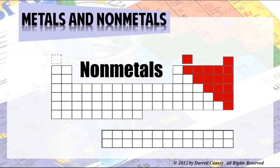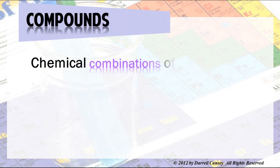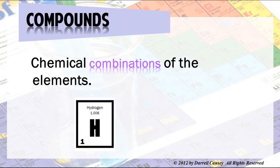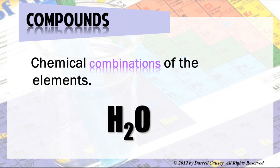Compounds are chemical combinations of the elements. We take things like hydrogen, carbon, oxygen, sodium, and chlorine, and they come together and bond through chemical means to make compounds like water. So compounds are chemical combinations of the elements.